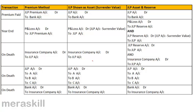This is the treatment of the joint life policy account on death of a partner. It is similar to that in case of retirement. The only exception is that instead of surrender value, we will receive the entire policy amount, since it is maturity due to a partner's death. The methods are: the premium method, the joint life policy method, and the joint life policy along with reserve.